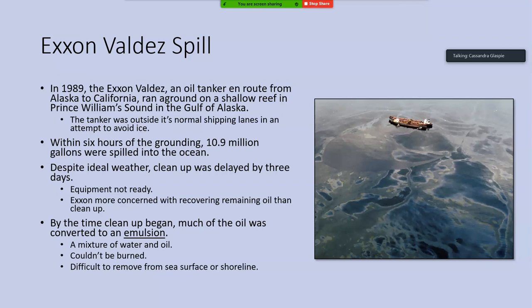Another reason cleanup was delayed is that initially Exxon was a lot more concerned about recovering the oil that still remained on the ship than dealing with the spill itself. After about three days, the winds picked up — Alaska generates storms — and that clear weather window was over. The oil started to be transported all over the place, and by the time cleanup really began in force, a lot of that oil had been mixed up by the waves and converted to an emulsion, a mixture of water and oil.